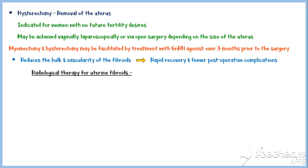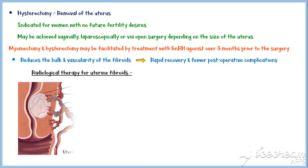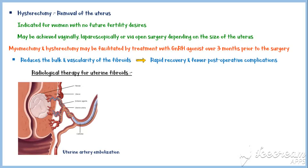Radiological therapy for uterine fibroids includes uterine artery embolization, a technique performed by a trained radiologist. A small incision is made in the groin under local anesthesia, and a cannula is placed into the femoral artery and guided into the uterine arteries. Embolization particles are then injected, reducing the blood supply to the uterus, which induces infarction and degeneration of the fibroids.